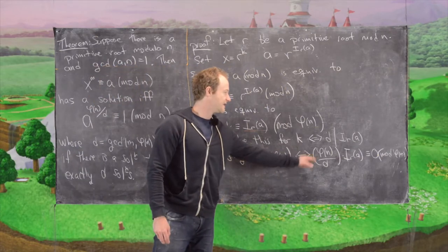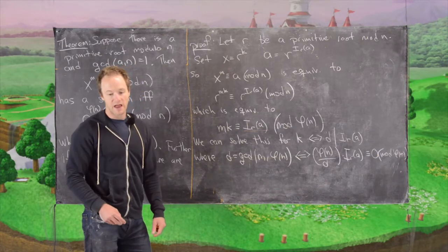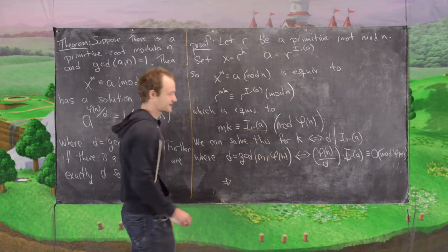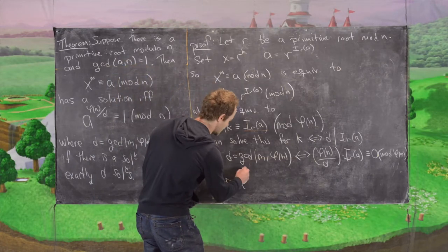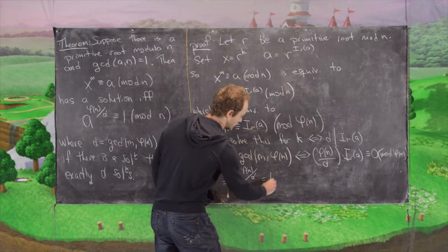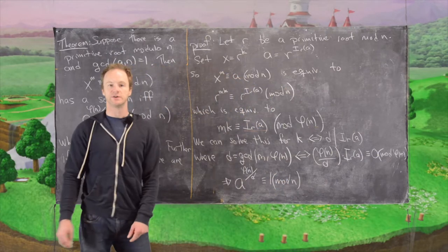Now we take this congruence and put it back into exponential form. This will be the same as a to the phi of n over d is congruent to 1 mod n.